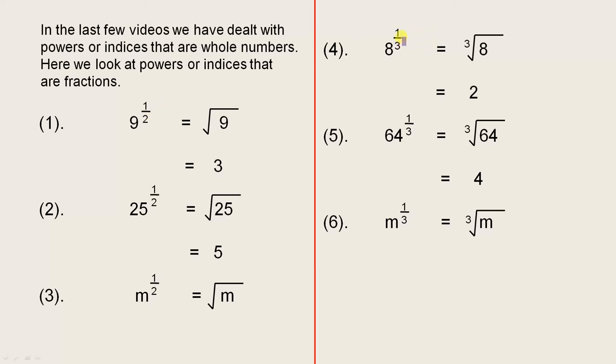8 to the power of 1 third. Again, we have 1 in the numerator and 3 in the denominator. That means the cube root of the number. That is, what number multiplied by itself 3 times will give you 8?